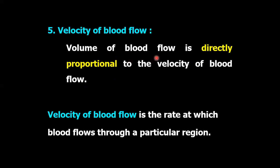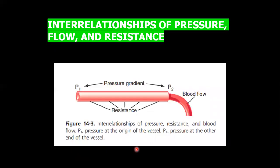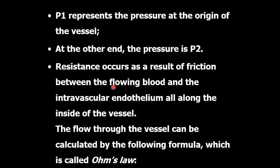Regarding velocity of blood flow — the volume of blood flow is directly proportional to the velocity of blood flow, meaning if velocity is increased, blood flow is increased. Velocity means the rate at which the blood flows through a particular region. Here is a figure showing the interrelationships of pressure, resistance, and blood flow. P1 is one end of the blood pressure and P2 is the other end, and resistance occurs as a result of friction between the flowing blood and the intravascular endothelium along the side of the vessels.